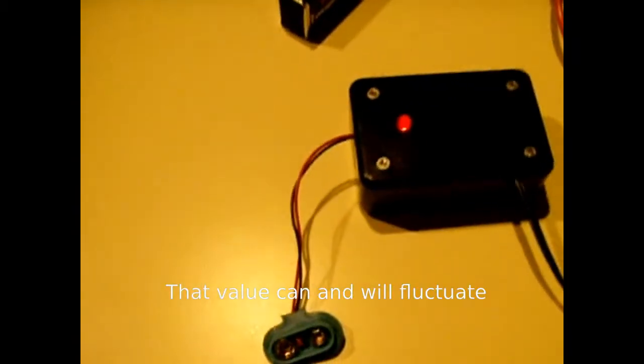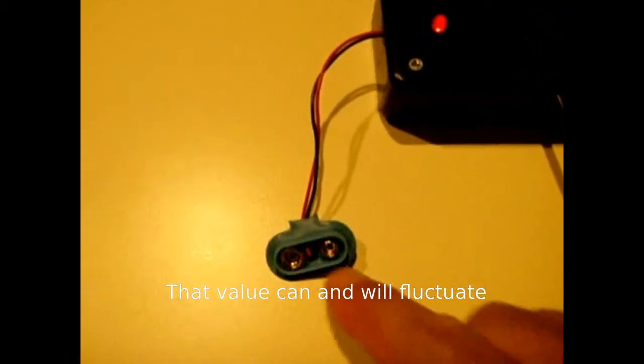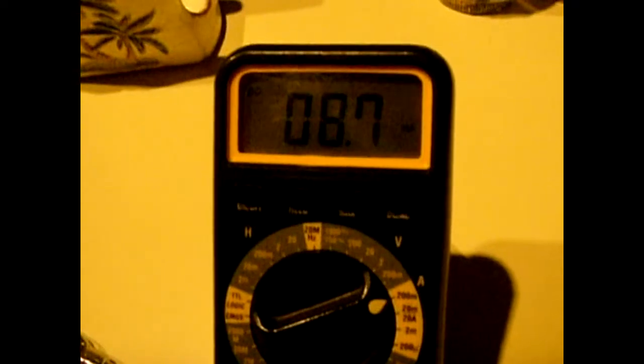We're going to take a look at the short circuit current flowing across the connector. 8.7 milliamps. Now it's a little lower when the battery is connected, it'll be like 7.3 or 7.4.